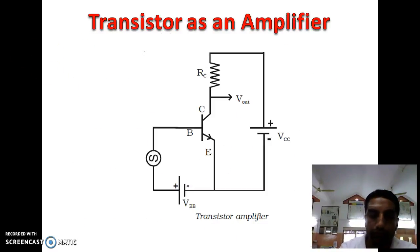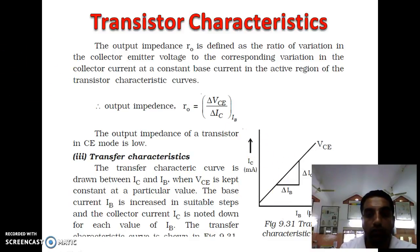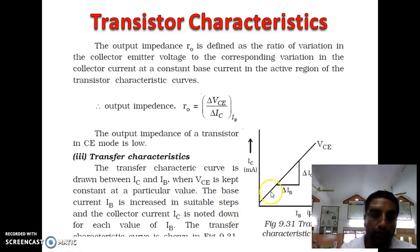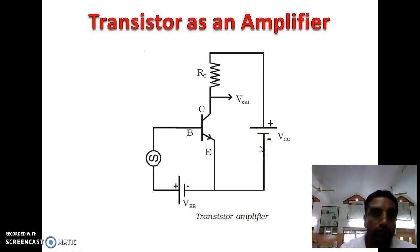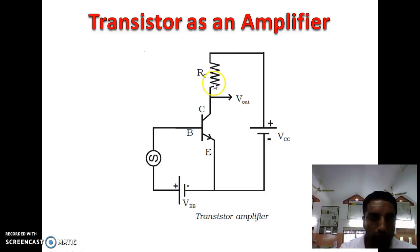In the transfer characteristic, the change in collector current IC with respect to the change in base current IB is plotted, and this curve is approximately linear. As base current increases, it linearly increases the collector current. When the transistor is used as an amplifier in common emitter configuration, the input voltage is given to the base-emitter and the output voltage appears across the collector load resistance RC. The output has a larger amplitude than the input, which is the amplifying action.